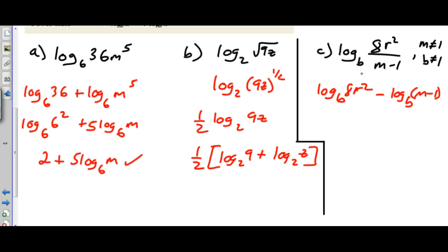Now here we have a product rule right here. Let's first simplify this guy first, so I can rewrite that as log base B of 8 plus log base B of R squared, and then I could just move my 2 down so this is log base B of 8 plus 2 times log base B of R.